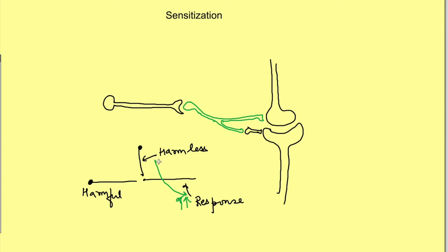Importantly, even though a harmless stimulus elicits a response, we are not talking about pairing of stimuli. They are two different stimuli not being given together or within a limited time interval as in conditioned learning. So there is no association between the stimuli. In short, there is an increase in responsiveness to mild or non-noxious stimuli following a noxious stimulus.